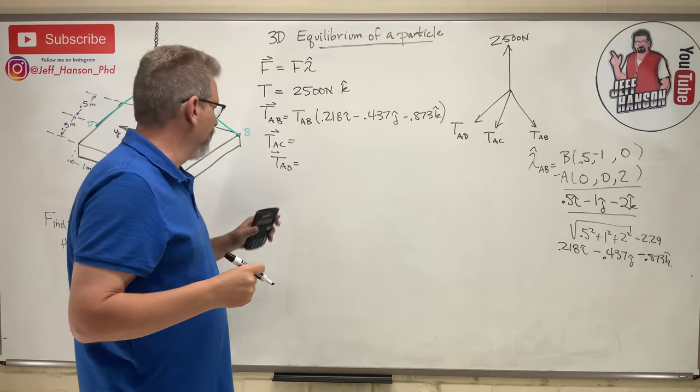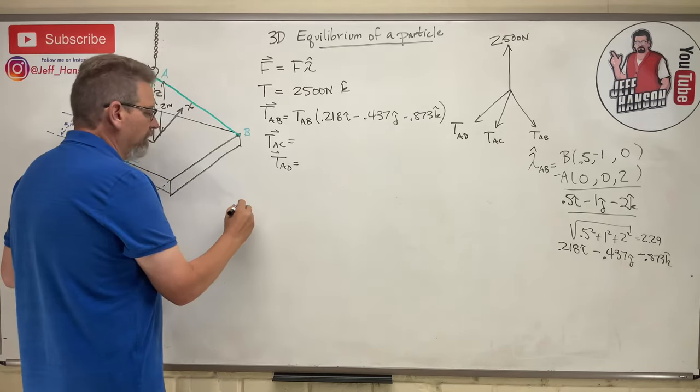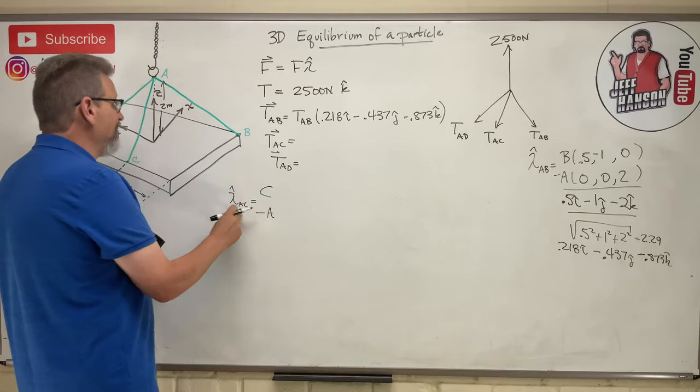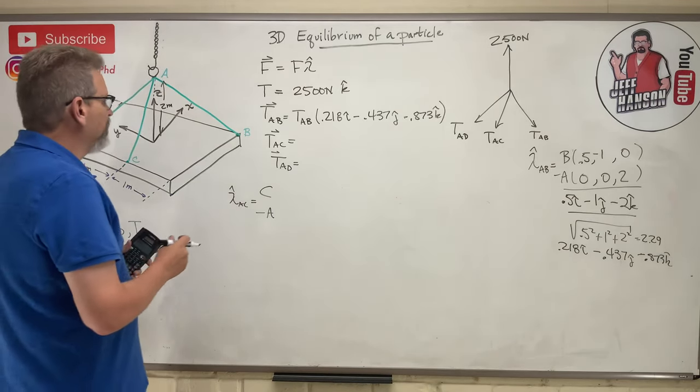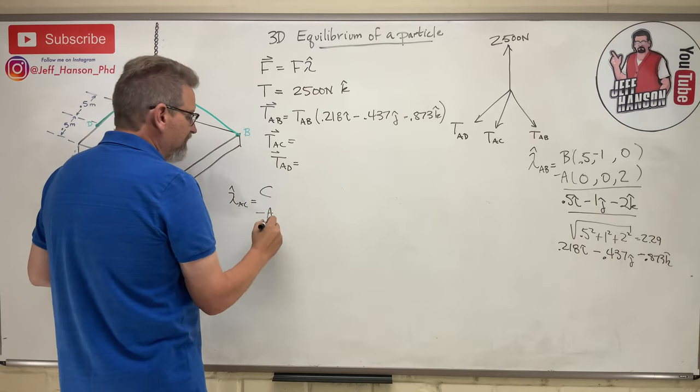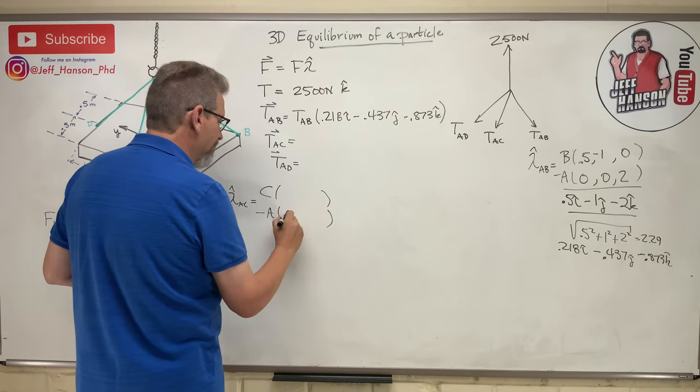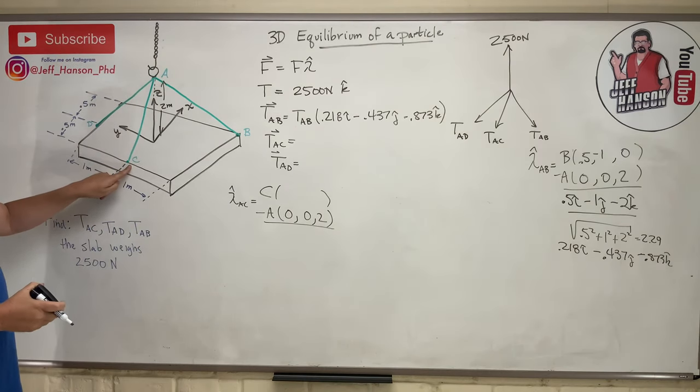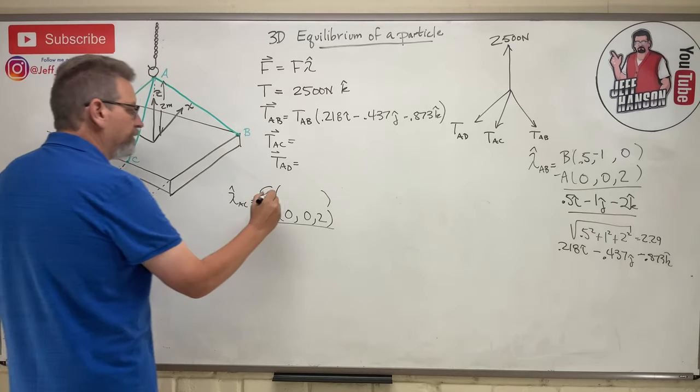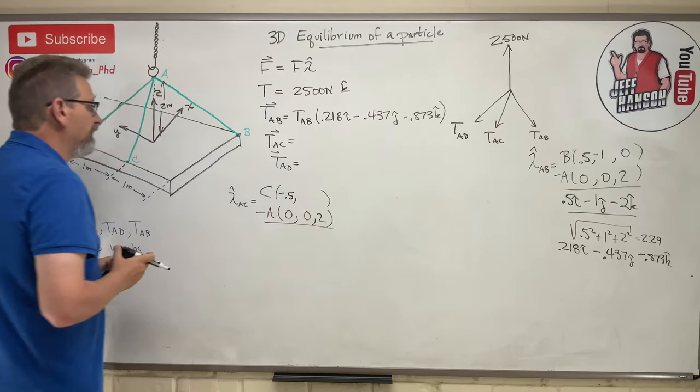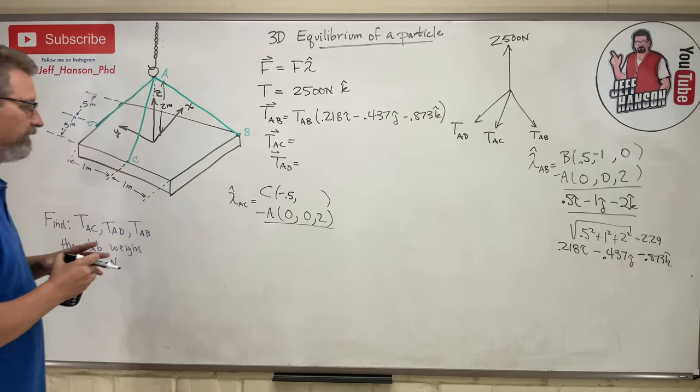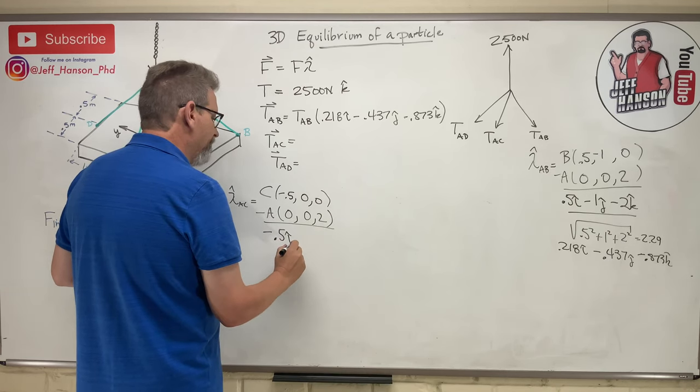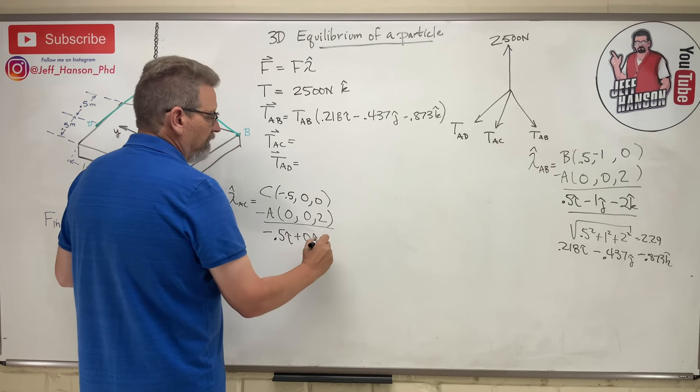So lambda hat AB is 0.5 divided by 2.29 equals 0.218 i hat, and then 1 divided by 2.29 is 0.437 j hat, and then 2 divided by 2.29 is 0.873. And remember if this guy is positive negative negative, then this guy has to be positive negative negative. So that's AB. We can say that it's TAB, which we don't know its magnitude, that's actually what we're looking for, times 0.218 i hat minus 0.437 j hat minus 0.873 k hat.